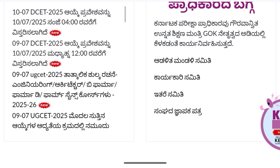Final checklist: check the KA or MCC website daily, lock your positions properly, keep documents ready in a folder, don't ignore the allotment instructions, and make sure to report to the college on time. Most importantly, don't compare your seat with others — what matters is your career, your goals, and your learning.